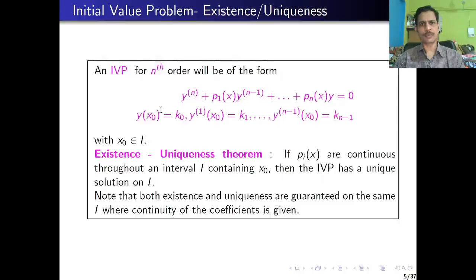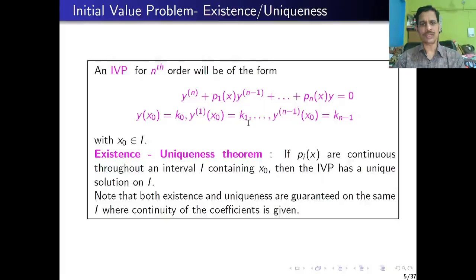The initial value problem for the nth order ODE is: y⁽ⁿ⁾ + p₁(x) y⁽ⁿ⁻¹⁾ + ... + pₙ(x) y = 0, with initial conditions y(x₀) = k₀, y'(x₀) = k₁, ..., y⁽ⁿ⁻¹⁾(x₀) = kₙ₋₁. So there are n many initial conditions for a nth order initial value problem; for the second order IVP we had two conditions.